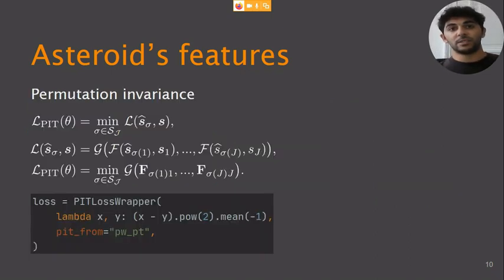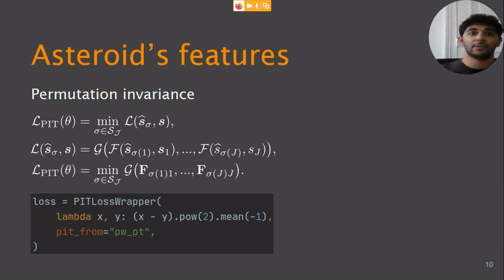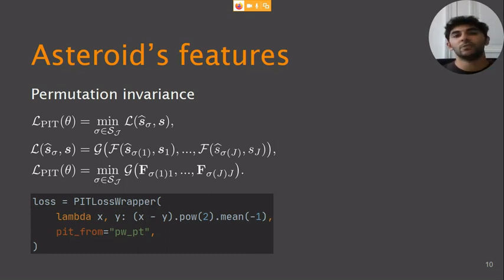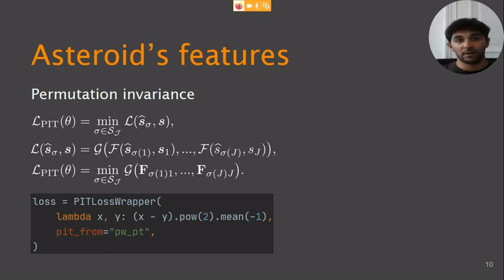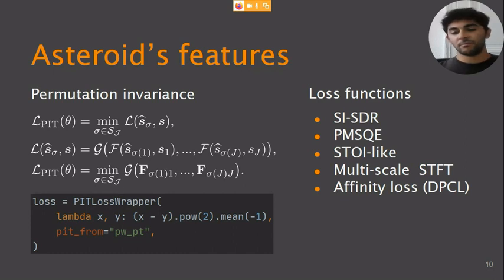Whenever sources to be separated are of the same nature — for example, separating speech against speech — we need to use permutation invariant training. The naive approach computes pairwise losses n-factorial times. Using a simple memoization trick, we can reduce it to n-squared loss computation and use the Hungarian algorithm to speed things up even more. The PIT loss wrapper can turn any simple loss into a permutation invariant one in two or three lines. On top of this wrapper, we support loss functions commonly used in source separation or speech enhancement.